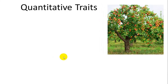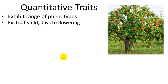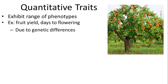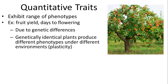Quantitative traits exhibit a range of phenotypes. Examples include fruit yield or days to flowering. Looking at two trees of the same size, the number of fruits they produce is variable and could range continuously from zero to 800 — they won't be exactly the same. So it's harder to say this is tall or short; it's somewhere in between. This is due to genetic differences within the plant, but genetically identical plants can also produce different phenotypes under different environments — if you water one tree and not the other, that's phenotype, not genes.